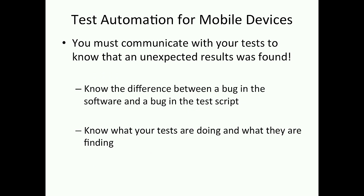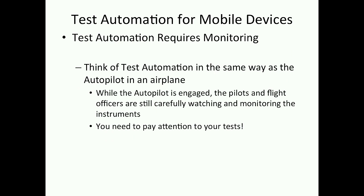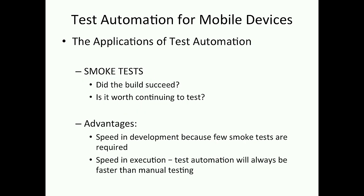Your tests have to communicate with you. Your tests have to inform you if something goes wrong. Know the difference between a bug in the software and a bug in the test script — often it's our test scripts that are buggy and not really the software. And know what your tests are doing and what they're finding. Think of it like this: test automation is like the autopilot in an airplane. When the captain sets the autopilot, he doesn't just go into the back — they're always watching the instruments. You have to monitor your tests and pay attention to what they're doing.